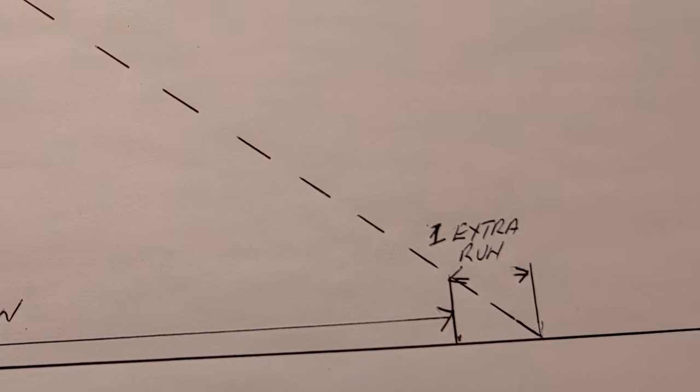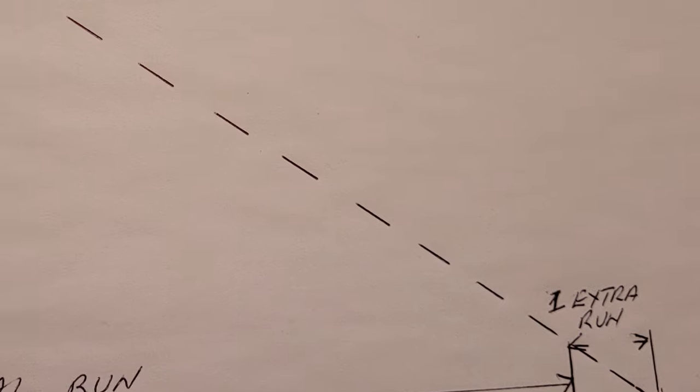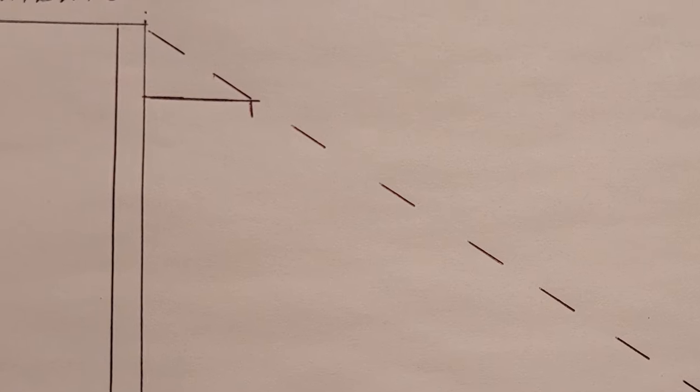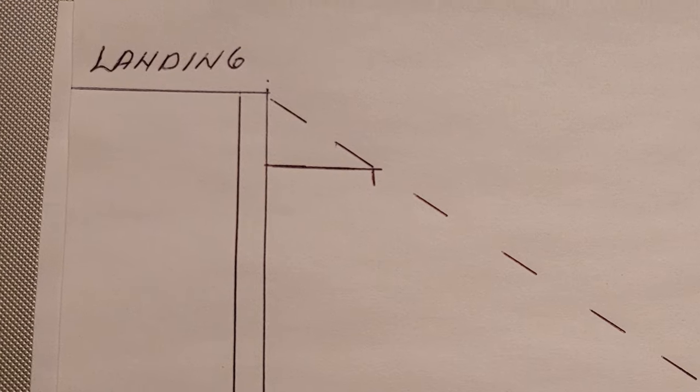Now draw a straight line from the floor where your total run plus the one tread length ends and draw that straight line directly to the edge of your landing at the top of where the stairs would end.